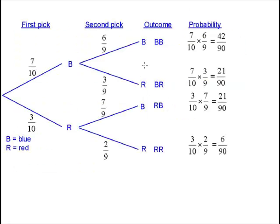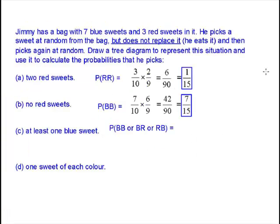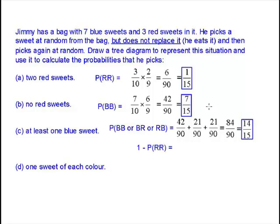At least one blue sweet. Well, that's got a blue, that's got a blue, that's got a blue. So we add those three together and see what that gives us. 84 ninetieths, 14 fifteenths. But if you remember, there's another way. Because the only one that we haven't got in this list is the probability of two reds. So if we take that away from 1, we'll get our answer a little bit quicker. 1 minus 6 ninetieths is 84 ninetieths, which is 14 fifteenths. Same answer, slightly quicker.